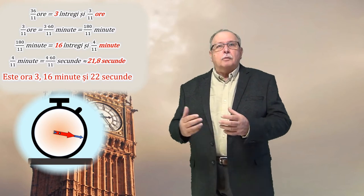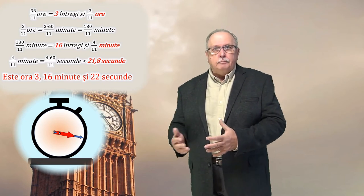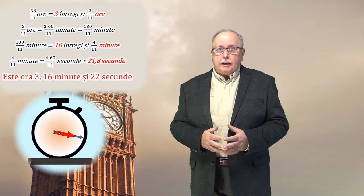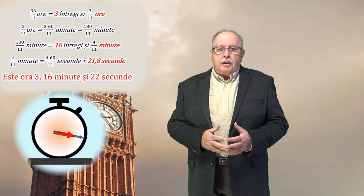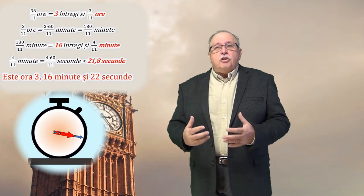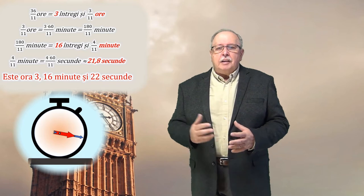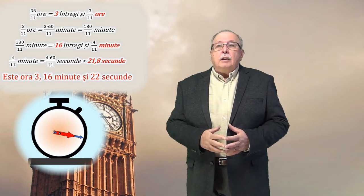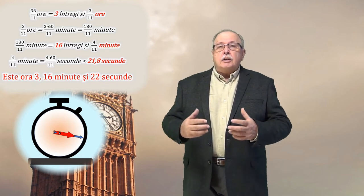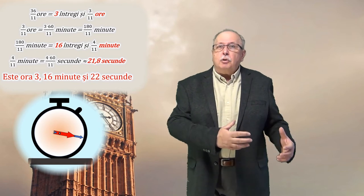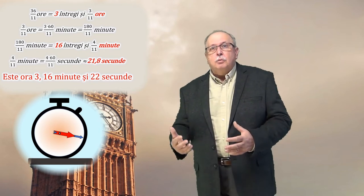Adică o sută optzeci supra unzprezece minute. Dacă facem împărțirea, vom vedea că unzprezece intră în o sută optzeci de șaizezece ori. Și rămâne rest. Rămâne rest patru. Înseamnă că avem trei și șaizeci minute. Mai trebuie să vedem câte secunde sunt.